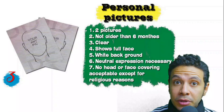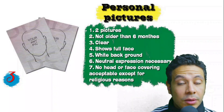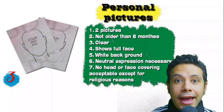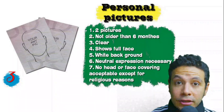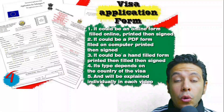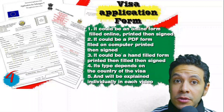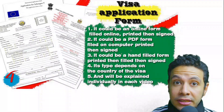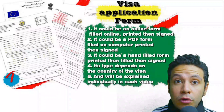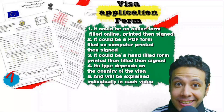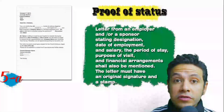For the visa application form, in general you need one copy, but sometimes two or three copies are required. Forms vary by country — usually you print and fill it manually, but many countries now offer online application forms that you fill digitally and then print and sign. In most visa application processes you will also be required to provide a proof of status.